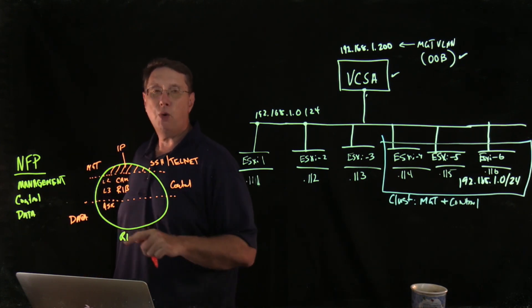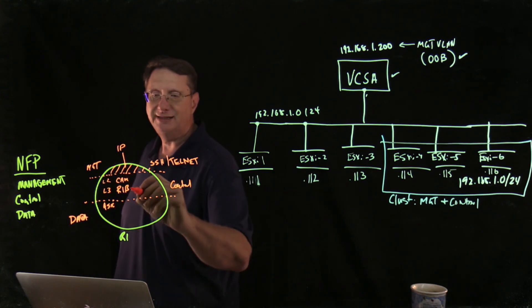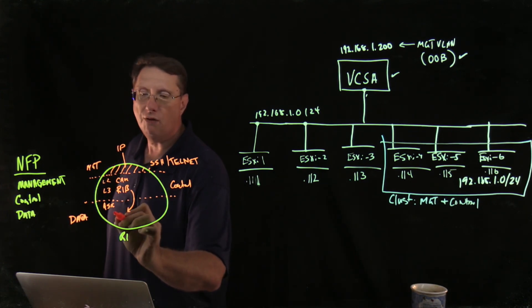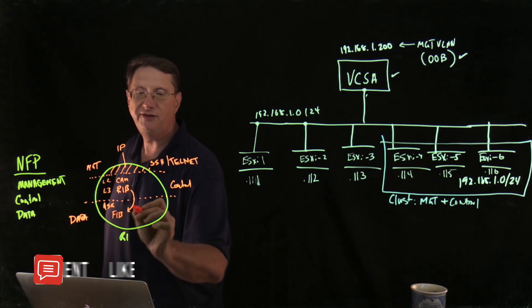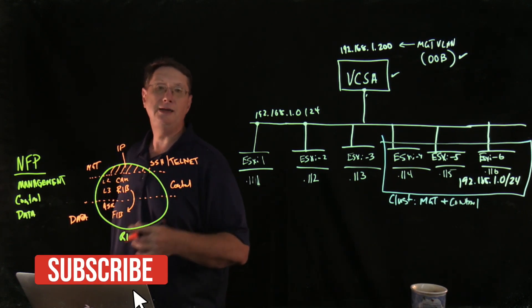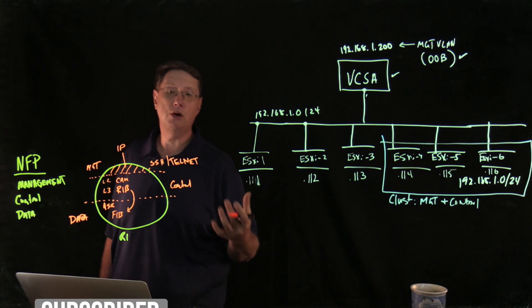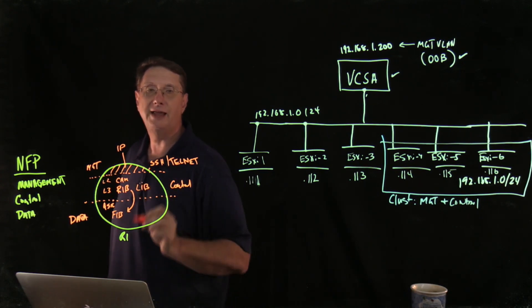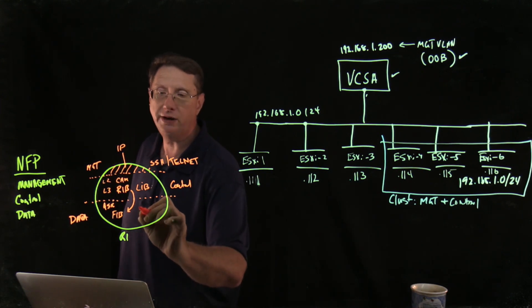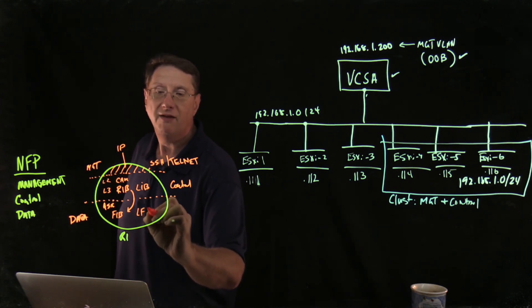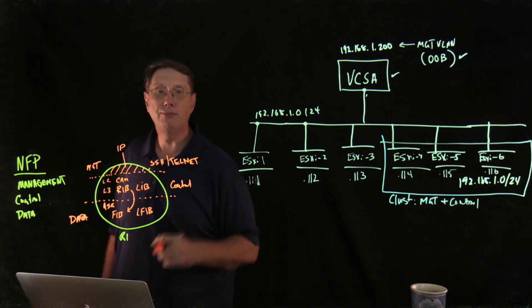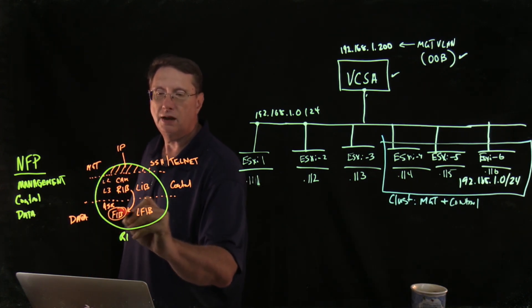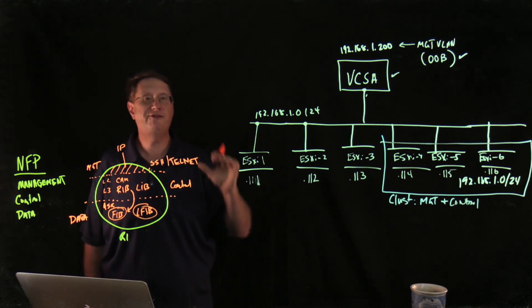That requires me to actually have intelligence running inside of the data plane, and we call that, as an example, would be the FIB. Another example may be, let's say, we're running MPLS, Multi-Protocol Label Switching. I may have something in here called the LIB, the Label Information Base. And down here in the forwarding plane, I can have or would have the LFIB, the Label Forwarding Information Base.